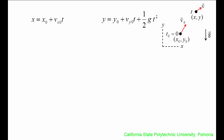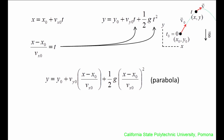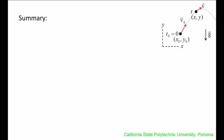We can determine the shape of the path taken by the object by eliminating t between the equations for x and y. Solving the x equation for t and substituting into the y equation gives a resulting equation that describes a parabola. In summary, to get the projectile motion equations, we assume the acceleration in the x-direction is 0 and the acceleration in the y-direction is only due to gravity, which points downward and is constant. With these accelerations, we found expressions for the x and y components of velocity at time t, and the x and y coordinates at that time t as well.